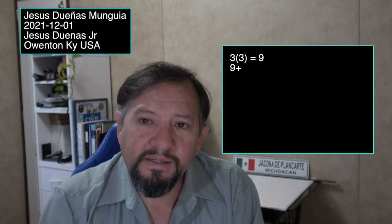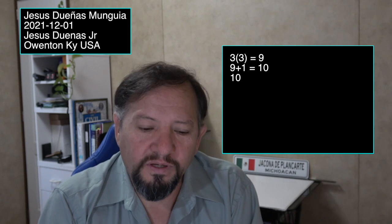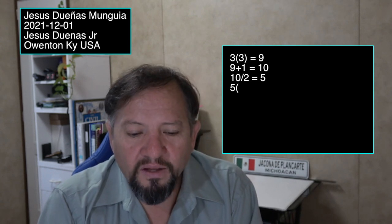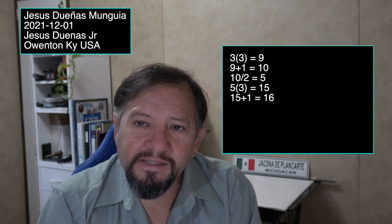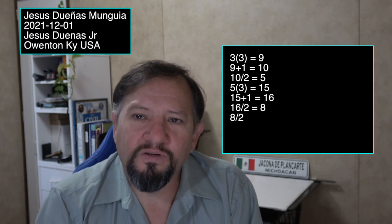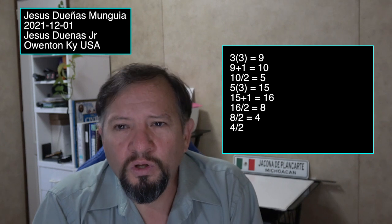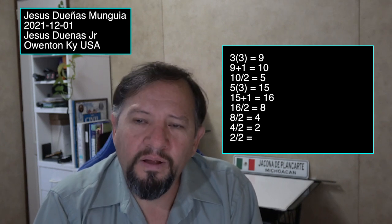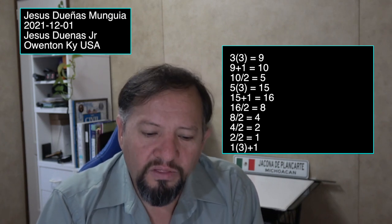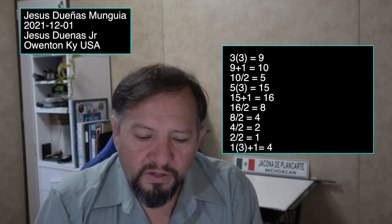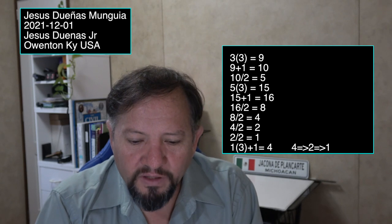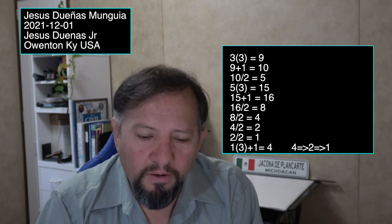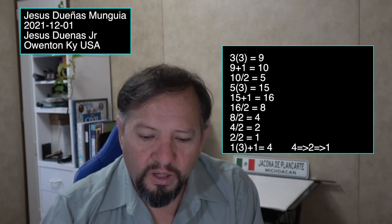Starting with 3: it's odd, so 3 times 3 is 9, plus 1 is 10. 10 is even, divided by 2 is 5. 5 is odd: multiply by 3 is 15, plus 1 is 16. 16 divided by 2 is 8, divided by 2 is 4, divided by 2 is 2, divided by 2 is 1. 1 is odd: times 3 is 3, plus 1 is 4. So we have this loop of 4, 2, 1.